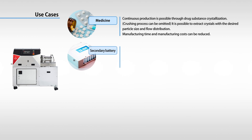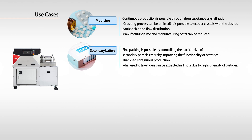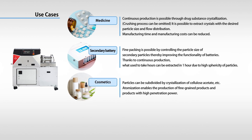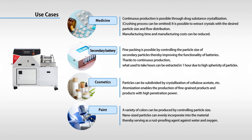In secondary batteries, the active material can be packed more densely due to the spherical formation and sharp particle size distribution, thereby enabling higher capacity, which is an ongoing challenge for the automotive industry. In cosmetics, finer particles and emulsions create a finish that spreads better and has a finer texture, which can improve penetration into the skin. By atomizing and dispersing pigments in paints, a uniform, glossy, and luxurious finish can be achieved. It also serves as a rust-proofing agent against water and oxygen.